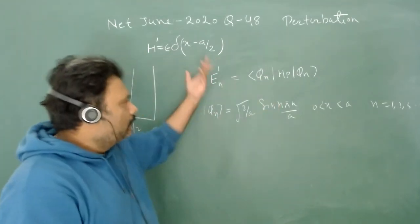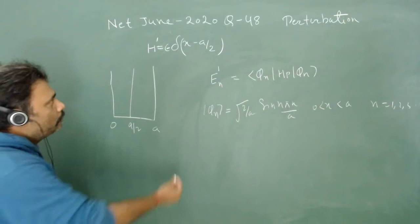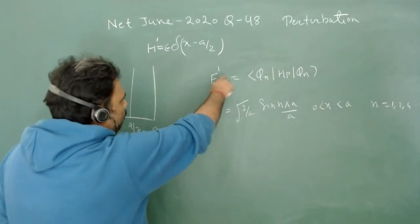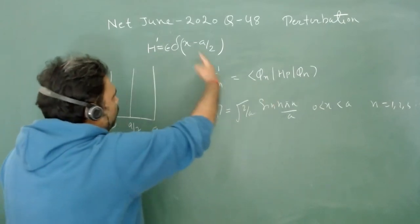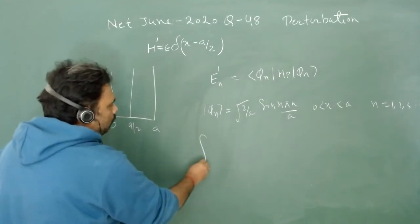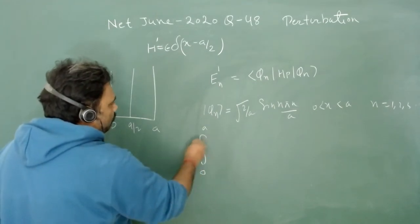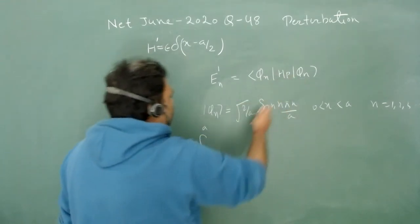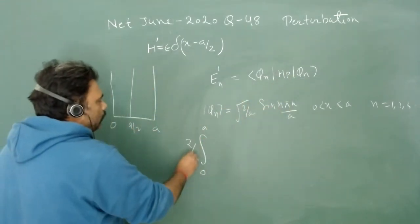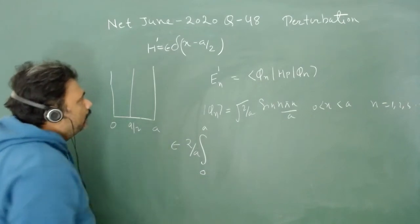So first we'll generalize, then we can give the answer. When we write this particular value, we have to write it in integral form. It will be from 0 to a. The 2/a will come outside, and we can take epsilon also outside.